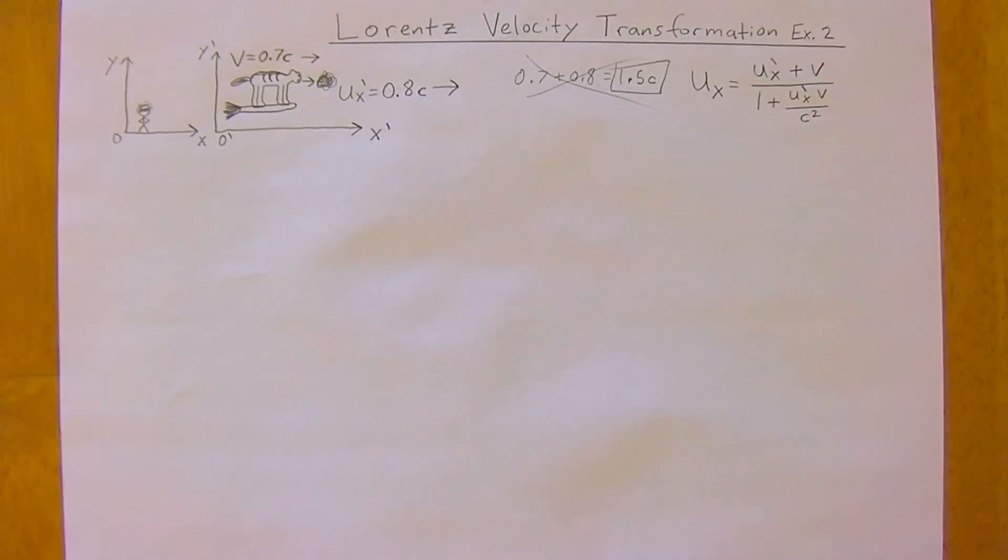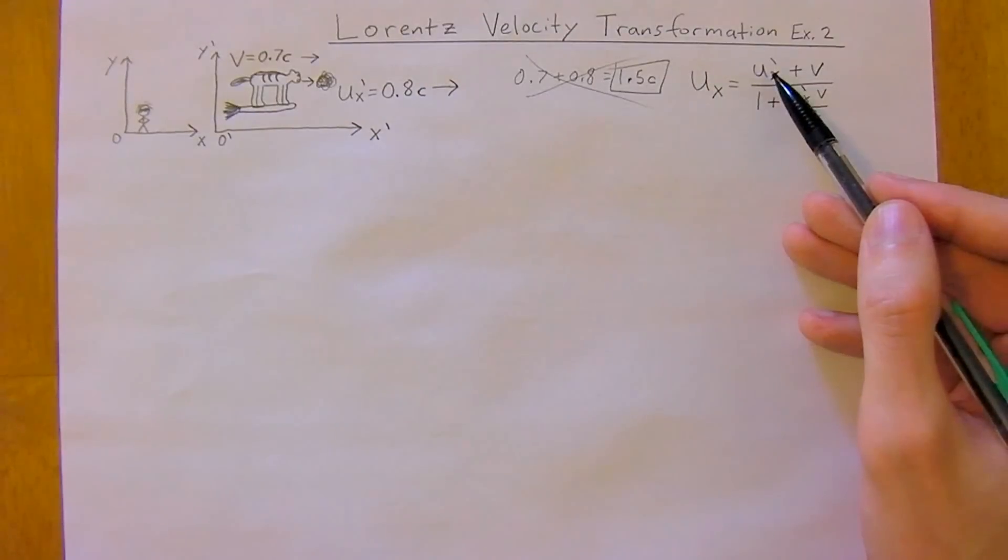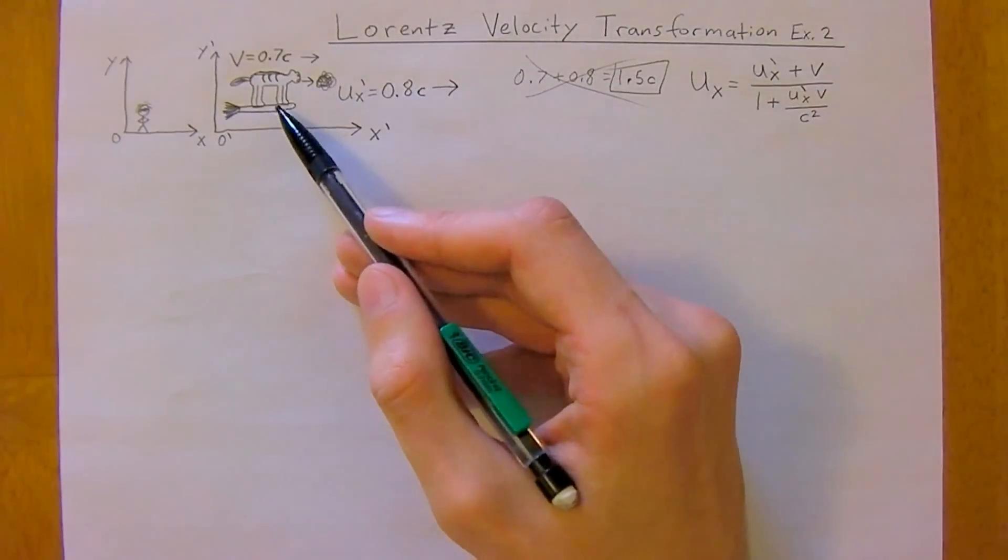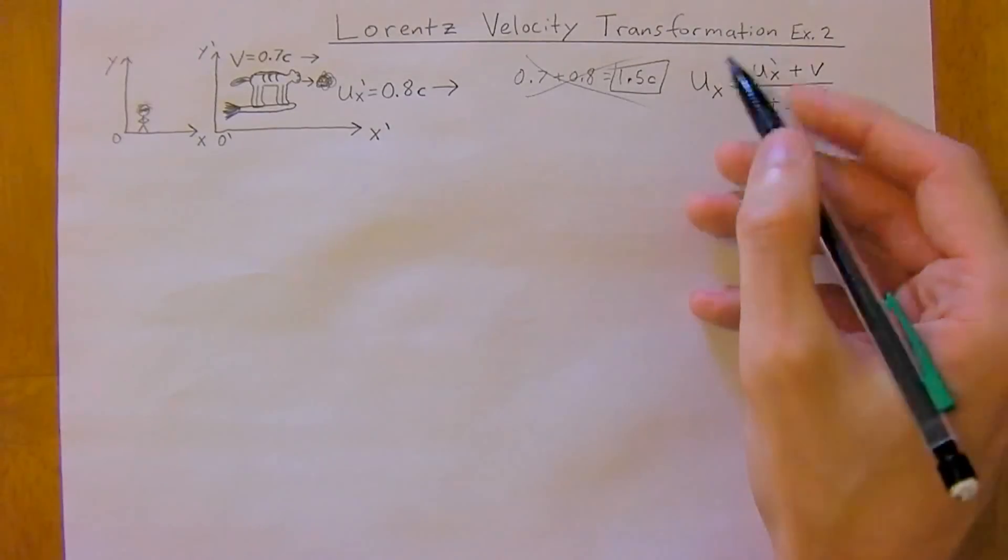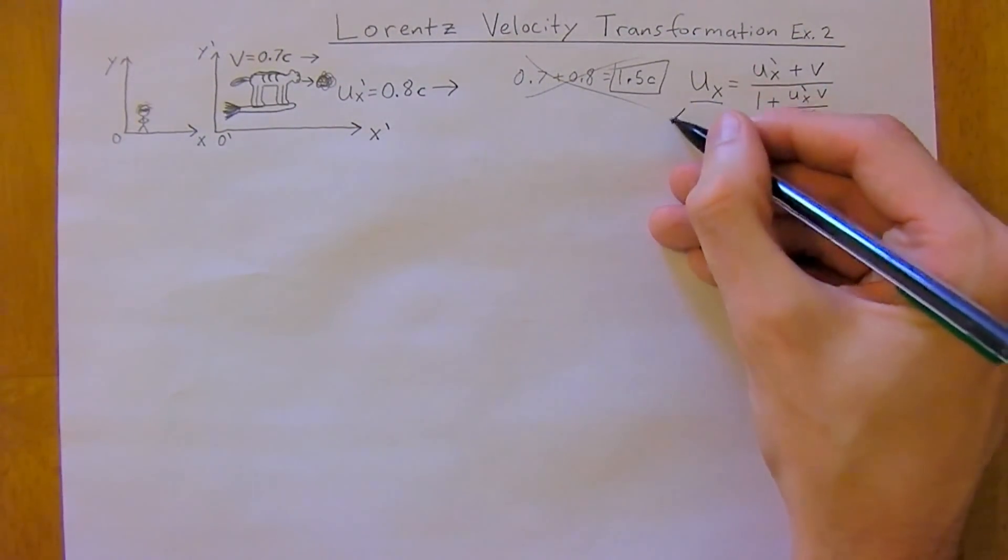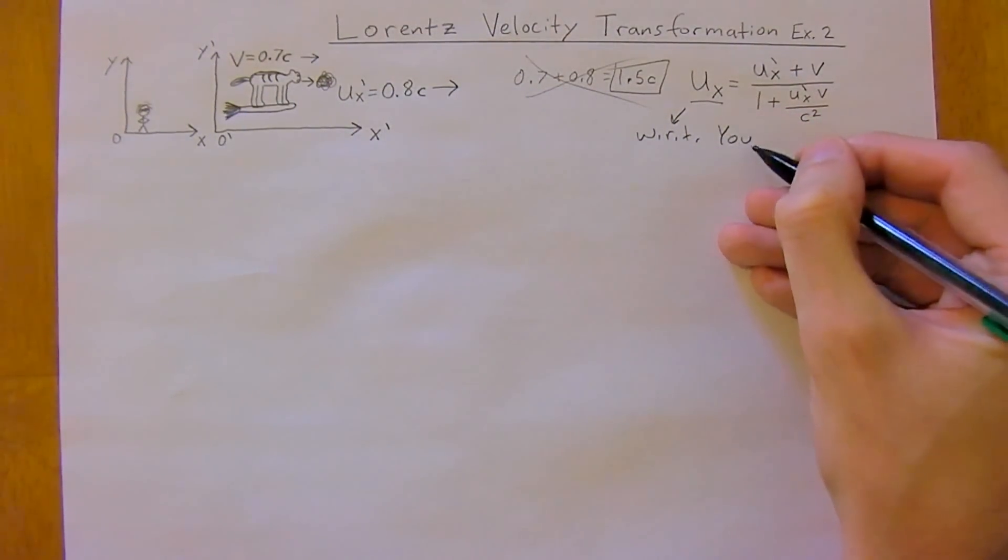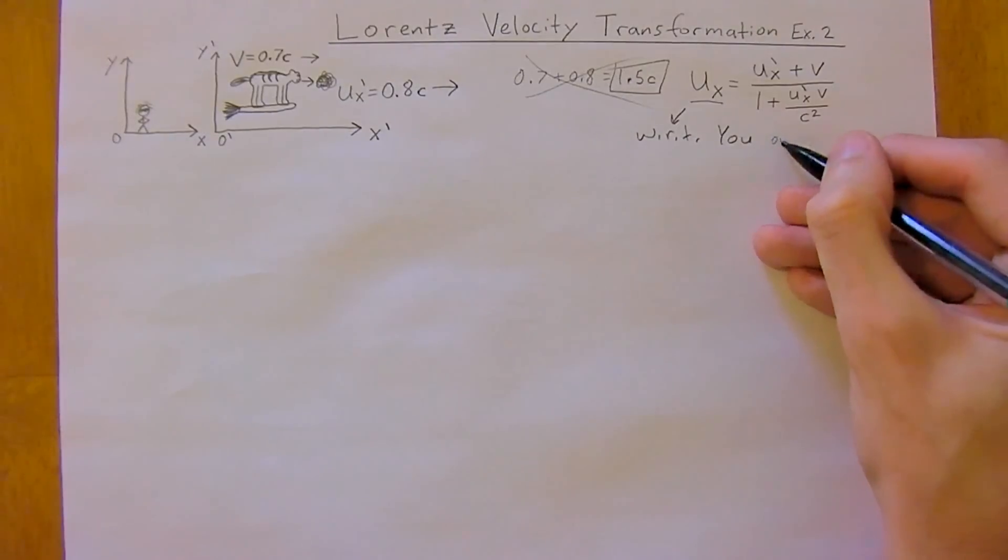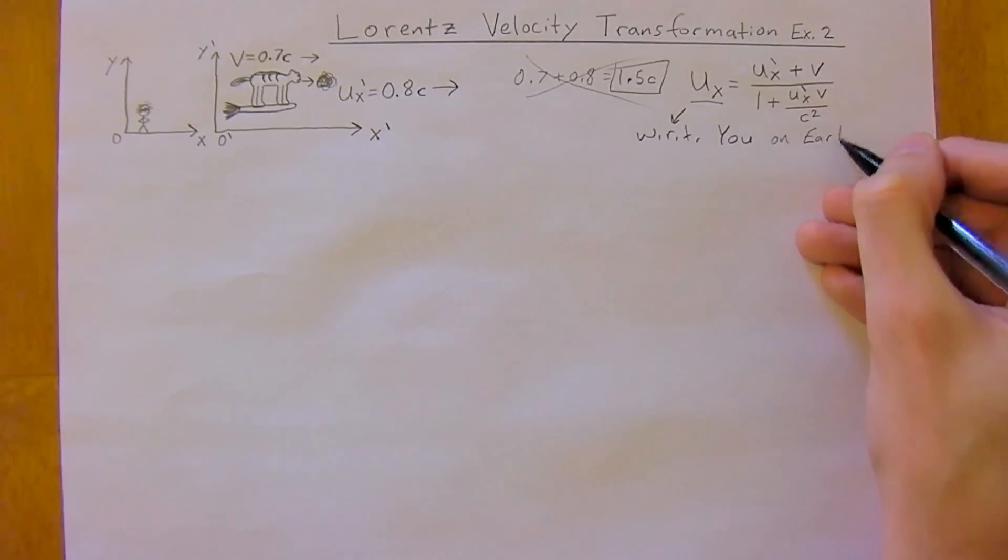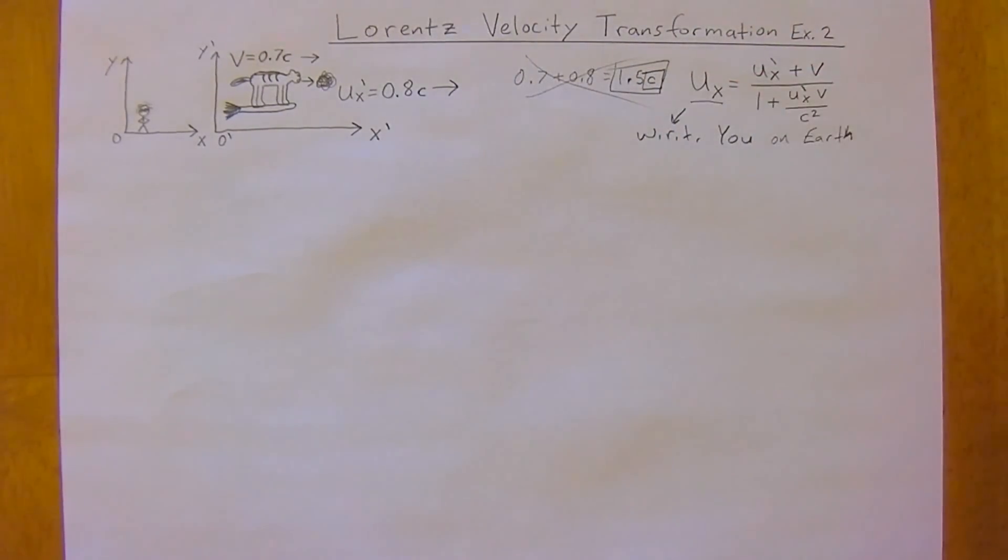So the way we're going to do this is we're going to use the Lorentz velocity transformation. And if you remember in the past example we were trying to get the velocity with respect to the cat, but now we want to figure out the velocity which you would see here on Earth, with respect to you on Earth, because nothing can break the speed of light so c is the universal speed law.